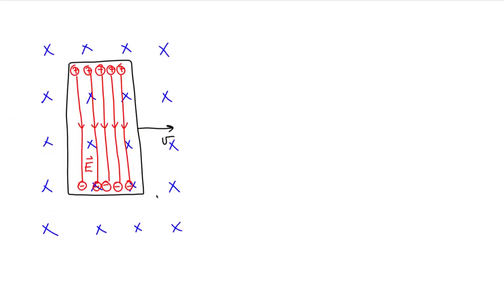Let's suppose that this conductor has a length L, as we'll indicate in this diagram. We know that there is an electric field induced in this conductor moving in this uniform magnetic field, and the magnitude of the electric field is equal to the product of the conductor's speed and the magnitude of the magnetic field. The direction of this electric field is straight downward.